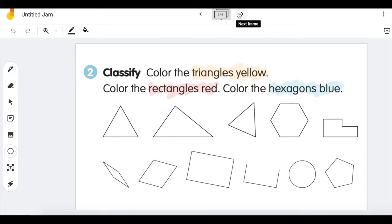On this page you're going to be coloring shapes depending on what they are. You're going to color any triangles you see yellow. You're going to color any rectangles that you see red and you're going to color hexagons blue. Remember hexagons have six sides.